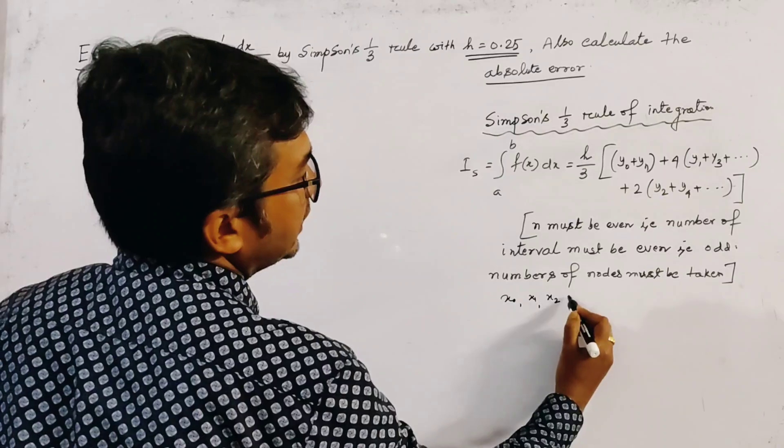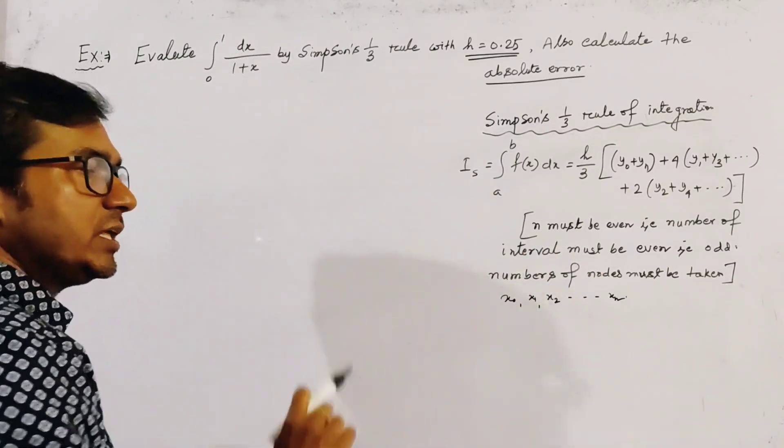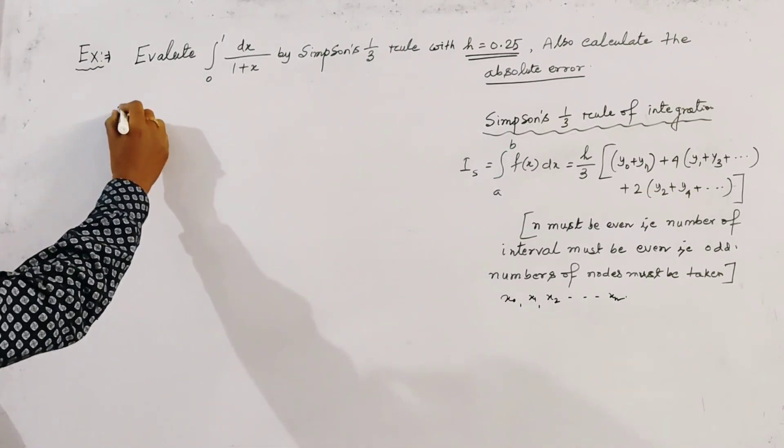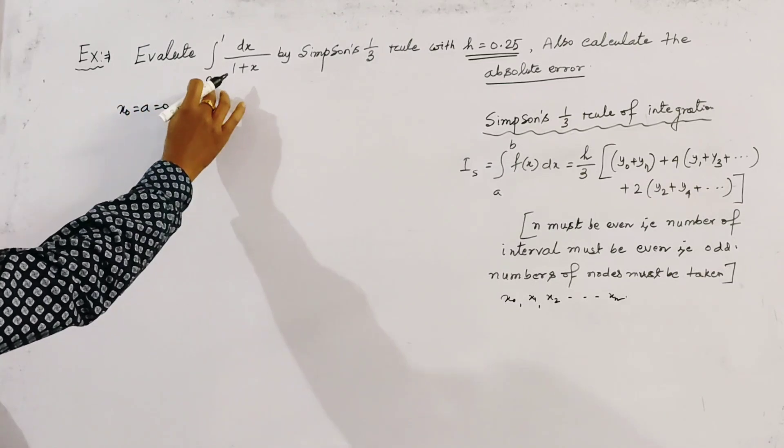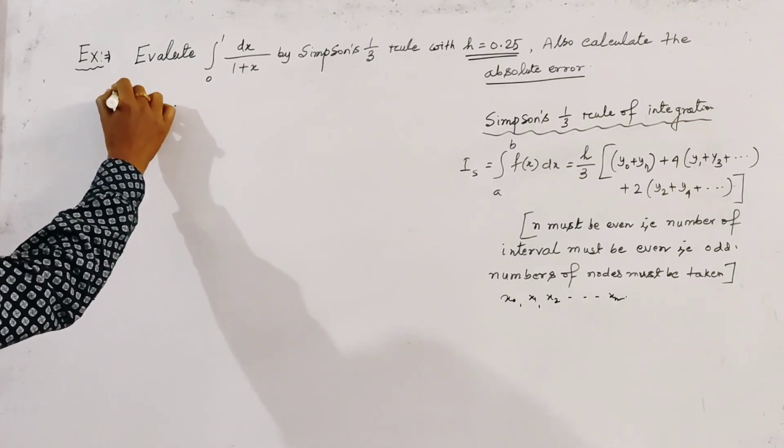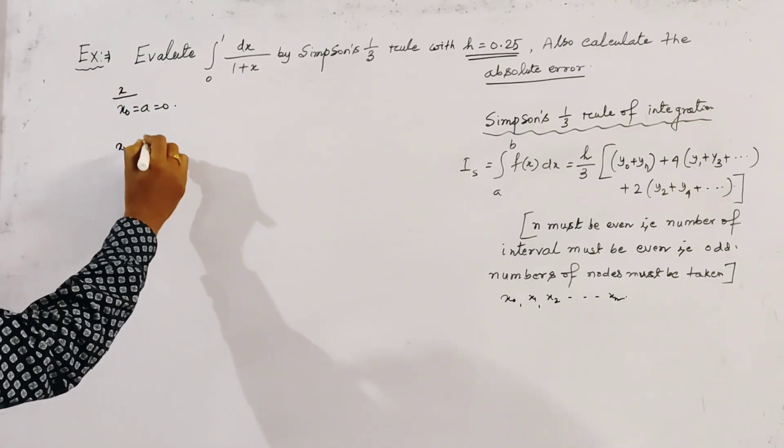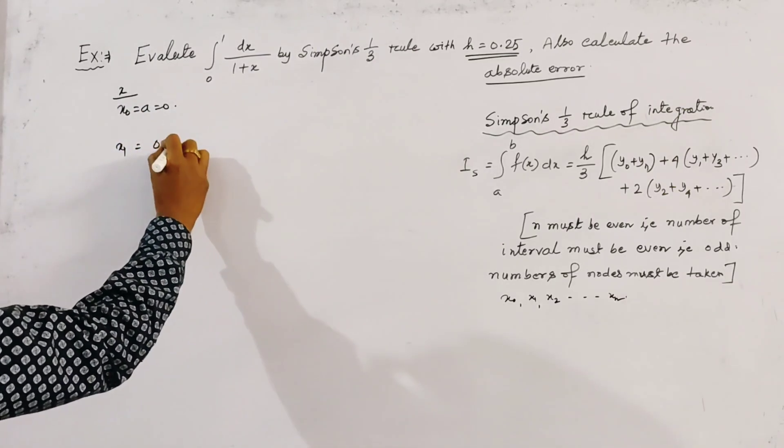If we take n as even, then we get an even number of intervals. Here our given points are: the first point is x₀ equal to a, which equals 0. So we write here x: this is x₀. The second point is x₁, which is x₀ plus h, which is 0.25.